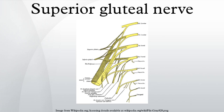It then accompanies the upper branch of the deep division of the superior gluteal artery and ends in the gluteus minimus and tensor fasciae latae muscle.